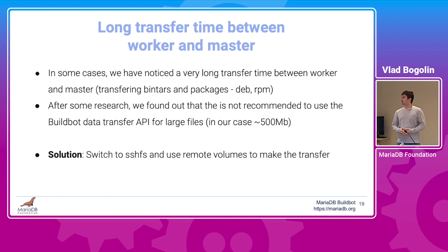Lastly, we found that in some cases there is a huge file transfer time between master and worker. Some builds create packages — DEBs, RPMs, or binary tarballs — which are aggregated centrally on the master machine and need to be transferred from the worker to the master. After research, we found it is not recommended to use the BuildBot Data API to transfer large files, so we switched to SSHFS and used remote volumes for file transfer. This change provided a huge decrease in transfer time.